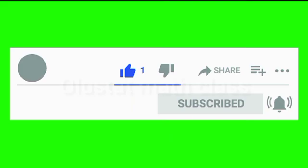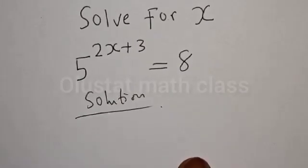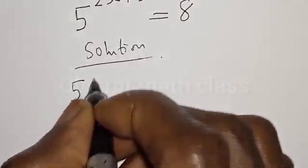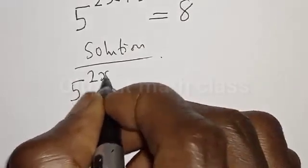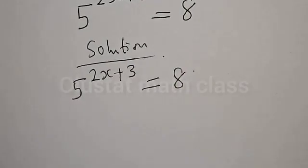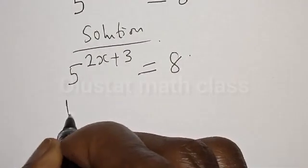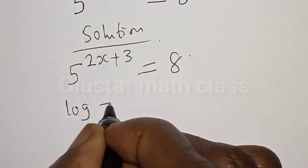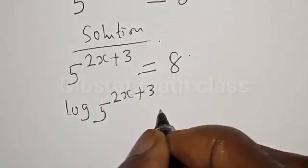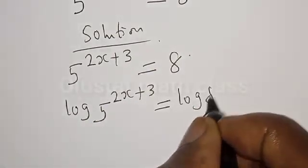Solution: we have the given equation 5 raised to power 2s plus 3 is equal to 8. Let's take the log of both sides. We have log 5 raised to power 2s plus 3 is equal to log 8.